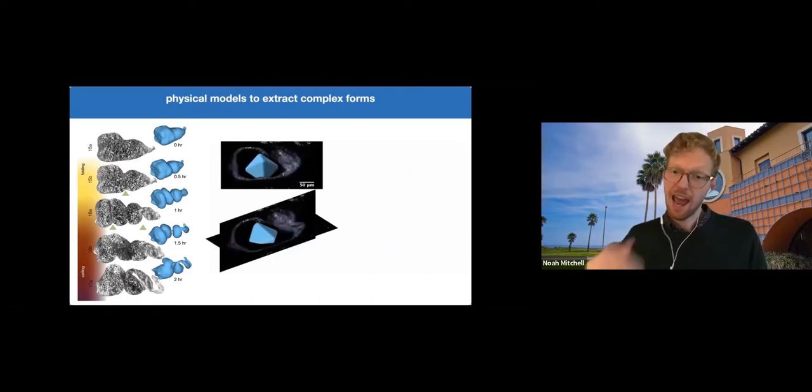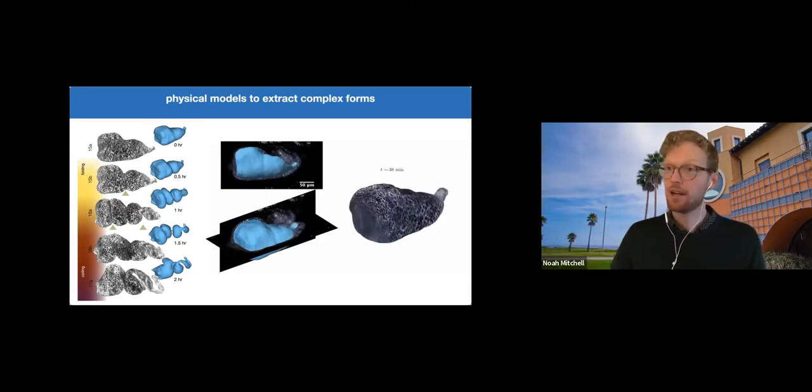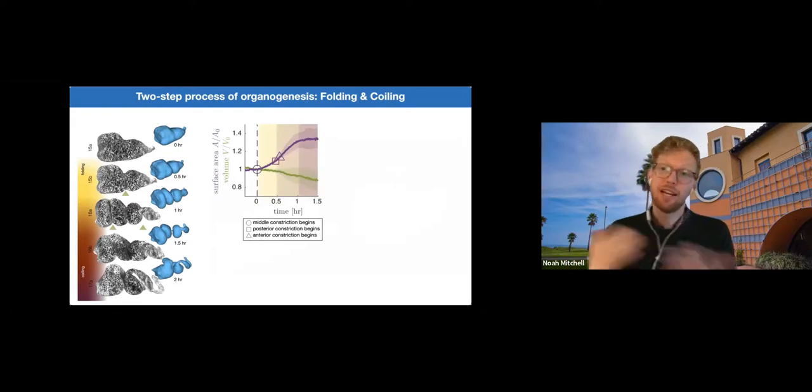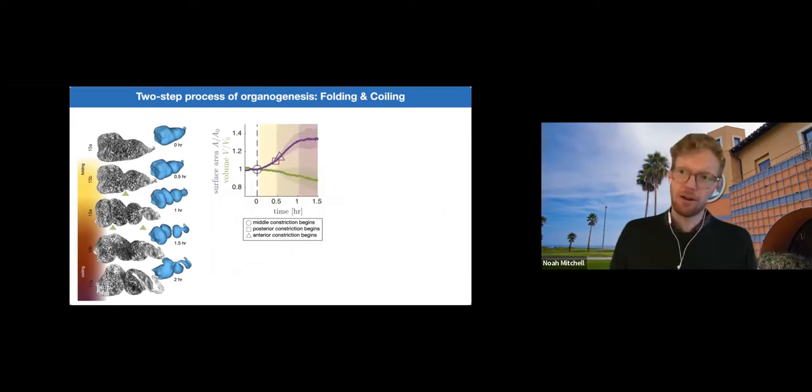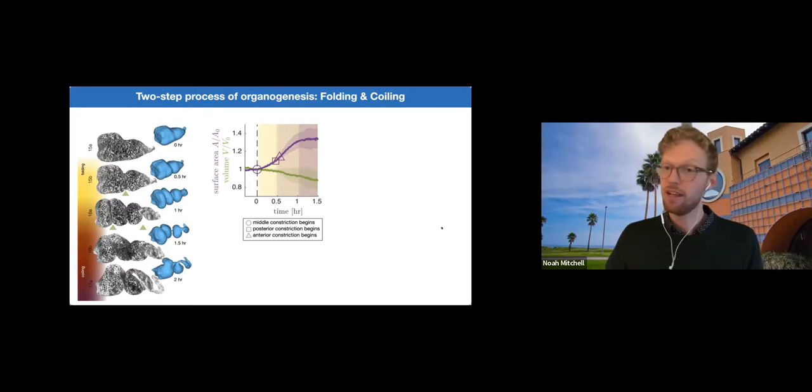It's really only after this time that we have these constrictions that the gut begins to coil into a chiral shape. So that suggests that there are really two stages of development here, folding, then coiling. And this interpretation is borne out quantitatively in measurements of the geometry. For instance, here in purple is the surface area. And the surface area grows during the first hour, which corresponds to the folding, hour to 70 minutes, and before plateaus during this coiling phase.